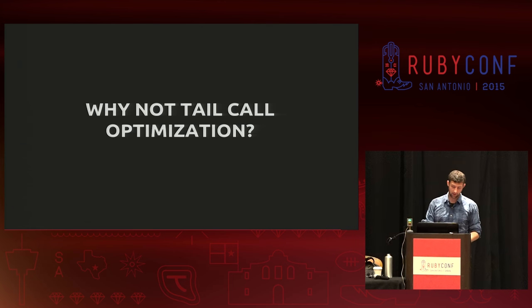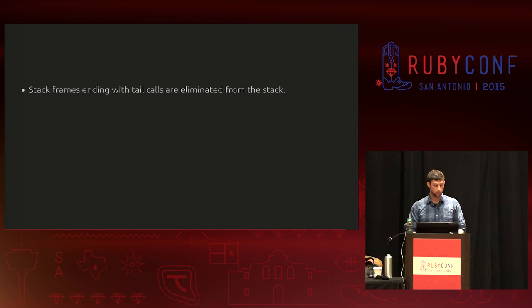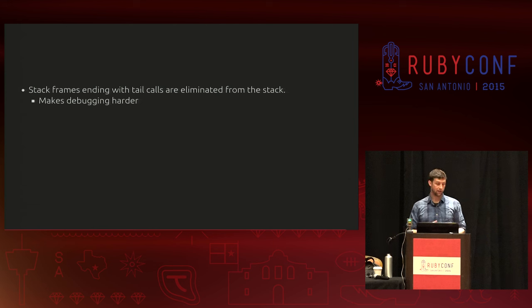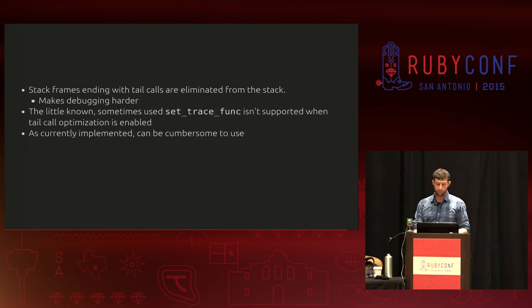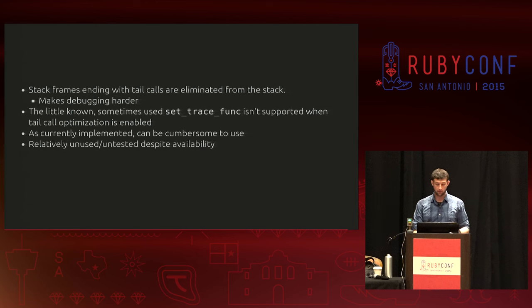Now on the flip side: why not tail call optimization? The stack frames that are part of a tail call optimization are eliminated from the stack, which makes debugging much more difficult. Gems like pry-byebug, pry-nav, or pry-stack-explorer would probably seg fault if you tried to run them against a Ruby compiled with tail call optimization enabled. There's also set_trace_func to watch out for. And as you saw from the examples, working with code strings can be pretty cumbersome.